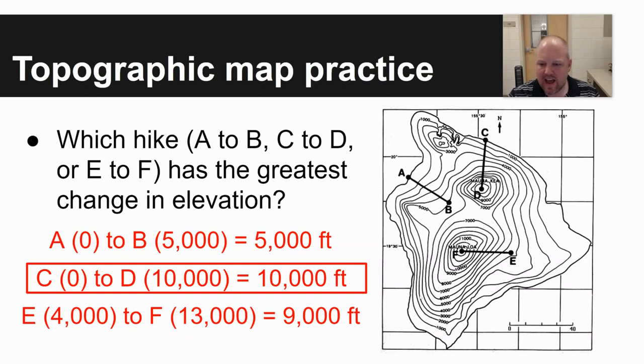Letter E to F, E begins, if you follow the lines up to where they're labeled, about 4,000 feet and ends up at about 13,000 feet. So our change in elevation is 9,000. So which hike would be the most difficult? The greatest change in elevation. That would be from sea level up to the top of Mauna Kea.